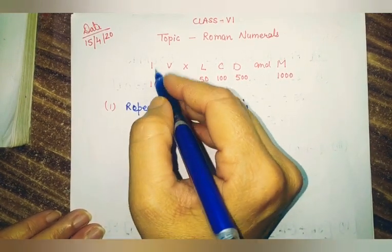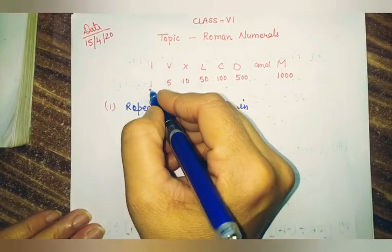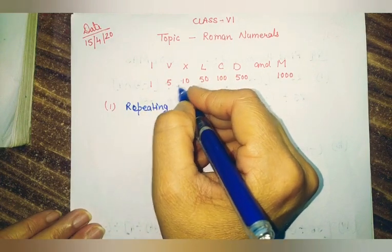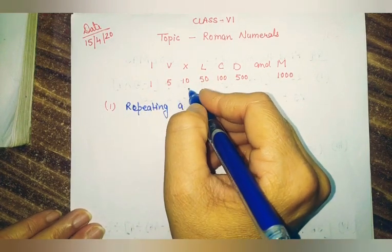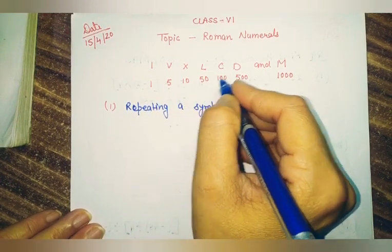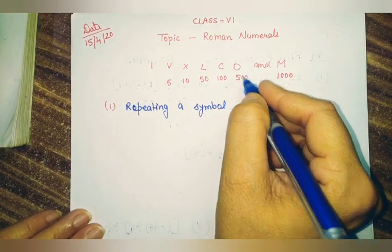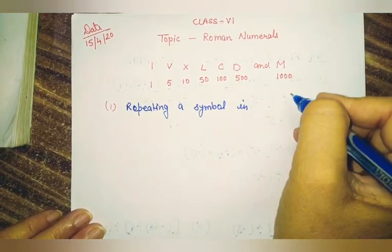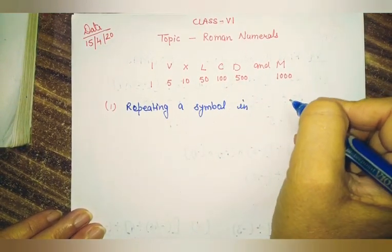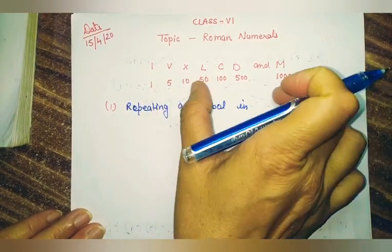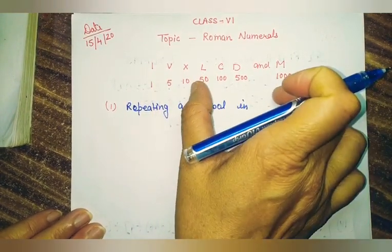These values are: I stands for 1, V stands for 5, X value 10, L 50, C 100, D 500, and M 1000. So to write other numbers using these symbols we have to follow some rules.